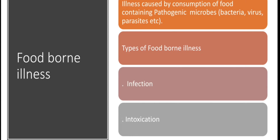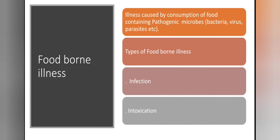Food-borne illness may be of two types: either it is an infection, or it is an intoxication. When we talk about infection, it is due to the presence of a live microbe present in food that is ingested by a human being, and that live microorganism is capable of causing disease. When we talk about food intoxication, it happens when a microbe produces a toxin on the food, and those toxins are responsible for causing disease. So there is a slight difference between these two terms.